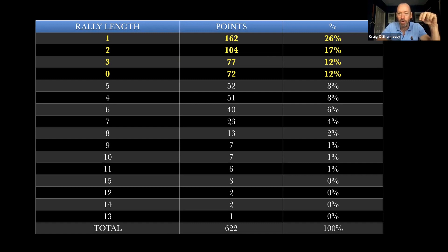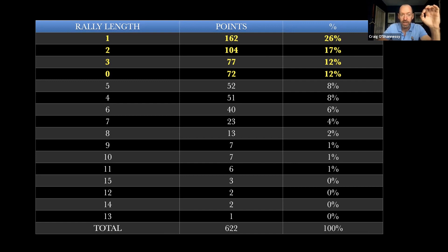Let me explain rally length, because it was a little confusing when I first discovered it. It's not shots hit — it's the ball landing in the court. So if I serve to you, you return back to me, and I hit a winner, that's a rally length of three — three balls landed in. Next point, I serve to you, you return to me, I make an error — that's a rally length of two. A rally length of zero is a double fault.